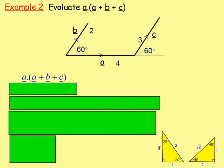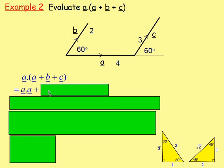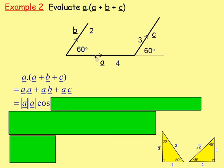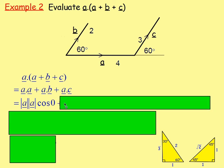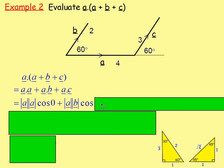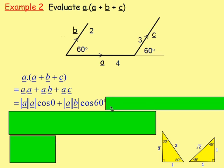Example 2: evaluate A dot (A + B + C). From the diagram, the length of vector A is 4, B is 2, and C is 3. Multiplying out the brackets gives A dot A + A dot B + A dot C. A dot A is magnitude of A times magnitude of A times cos 0 — same vector, 0 degrees between them. A dot B is magnitude of A times magnitude of B times cos theta; from the diagram the vectors point away from the vertex with 60 degrees between them, so that's cos 60.